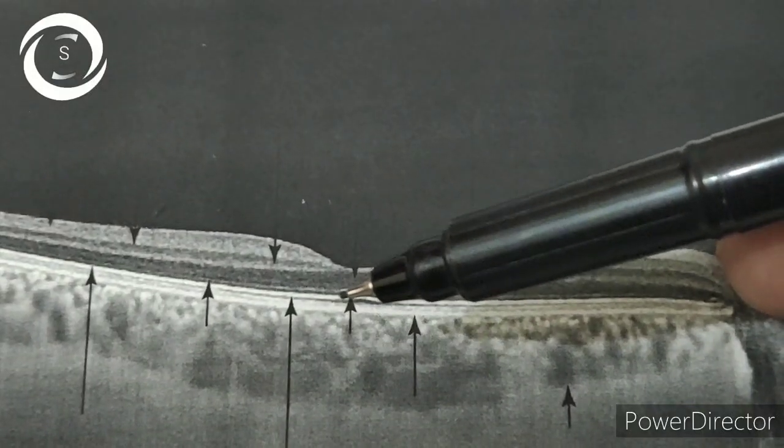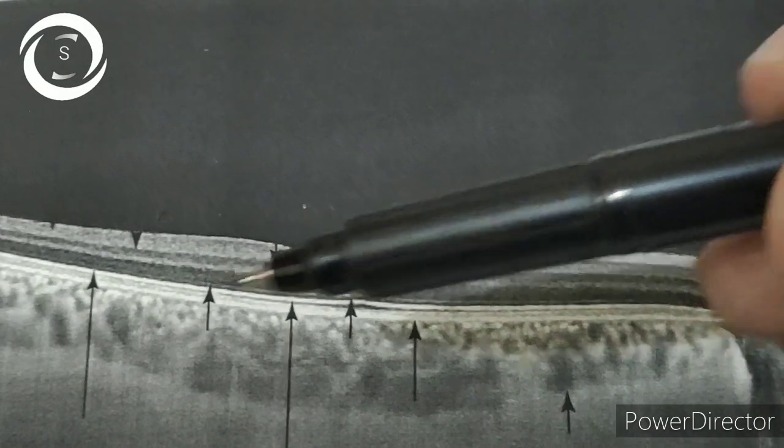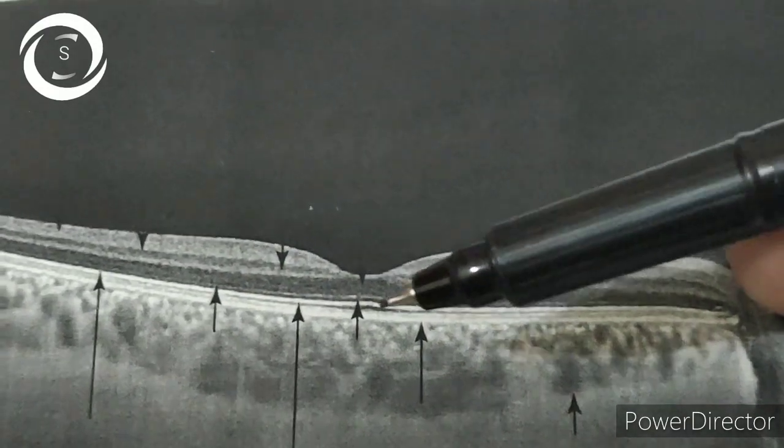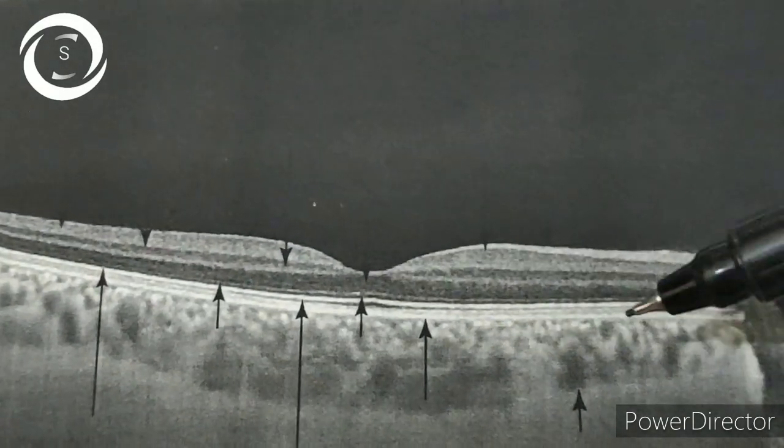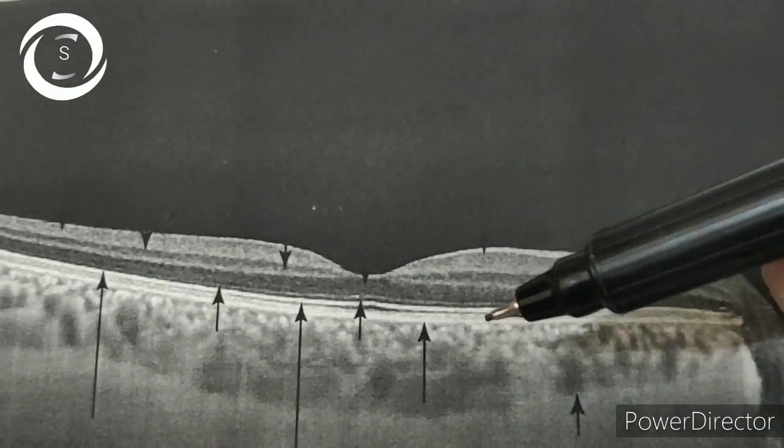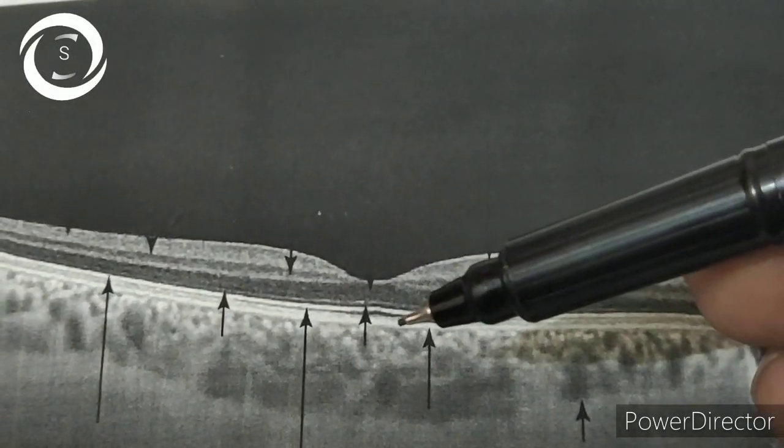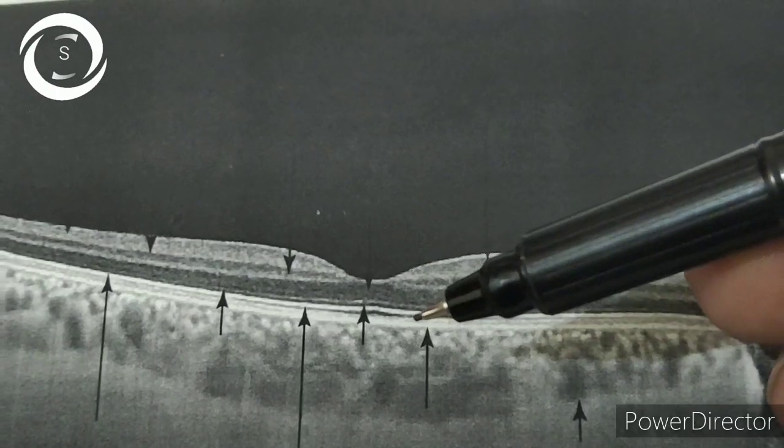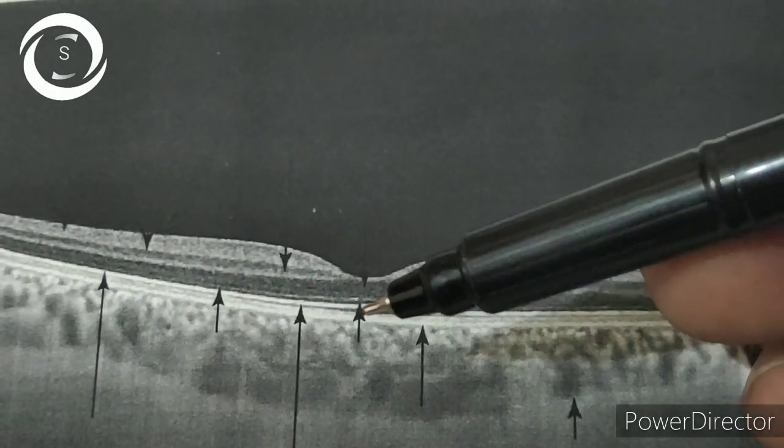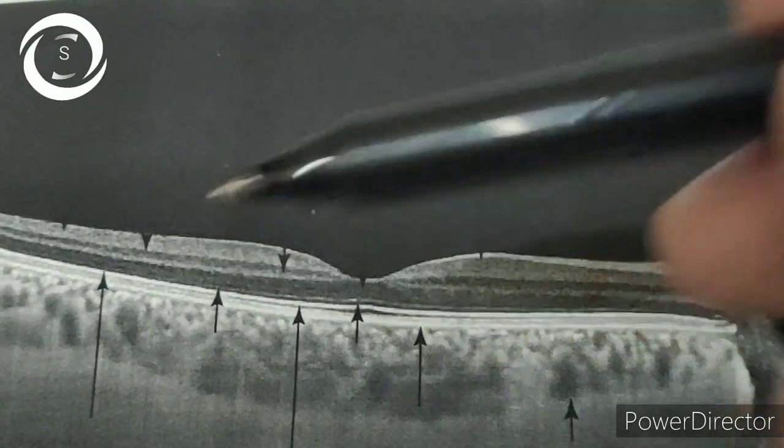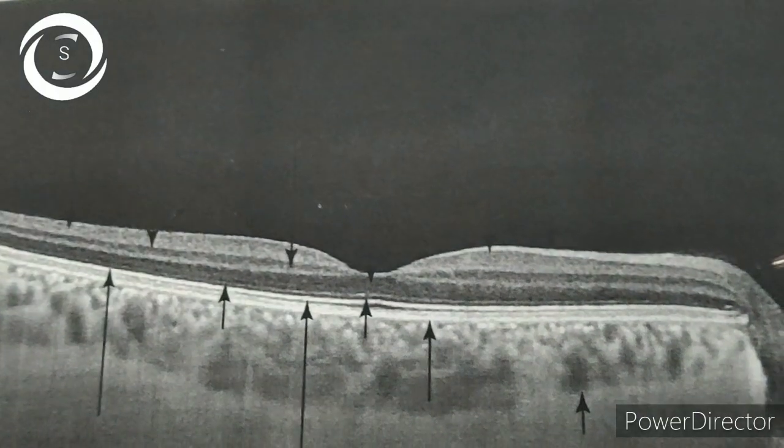At the fovea there is a hyper-reflective pocket beneath the IS/OS junction that contains the outer segments of cones. Beneath that is a very hyper-reflective area of retinal pigment epithelium and Bruch's membrane. The choroid zone, as we discussed earlier, is better visualized in swept source OCT.